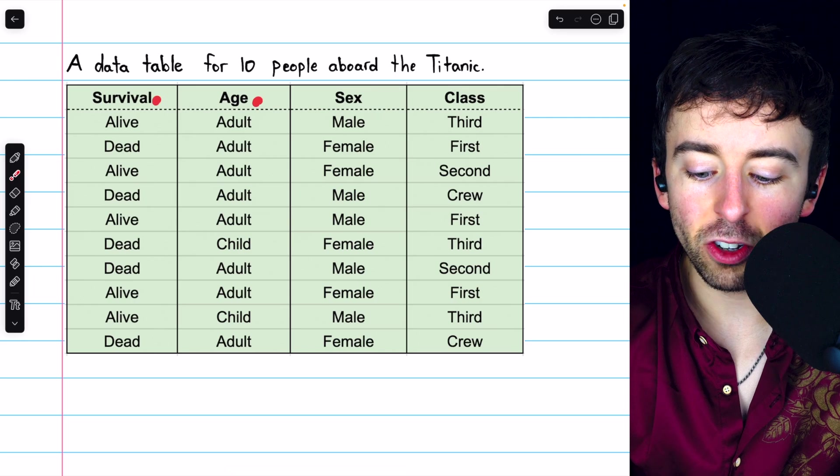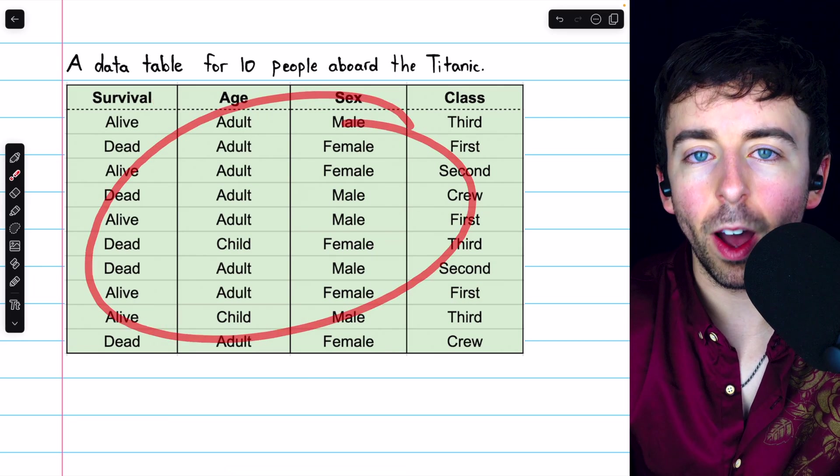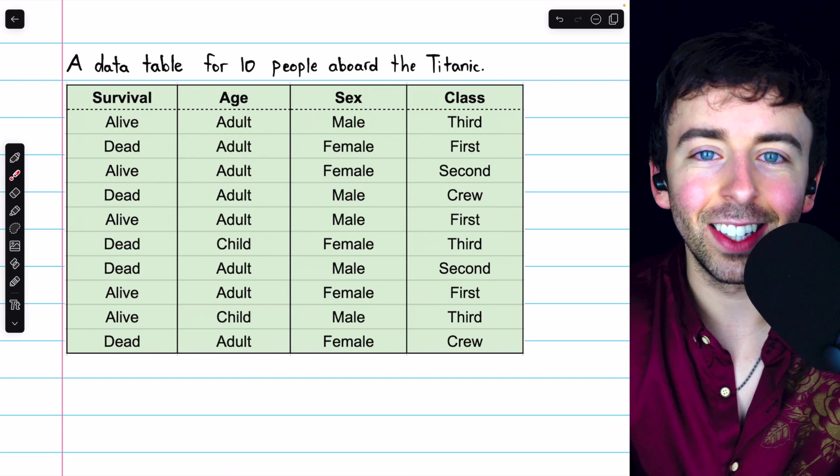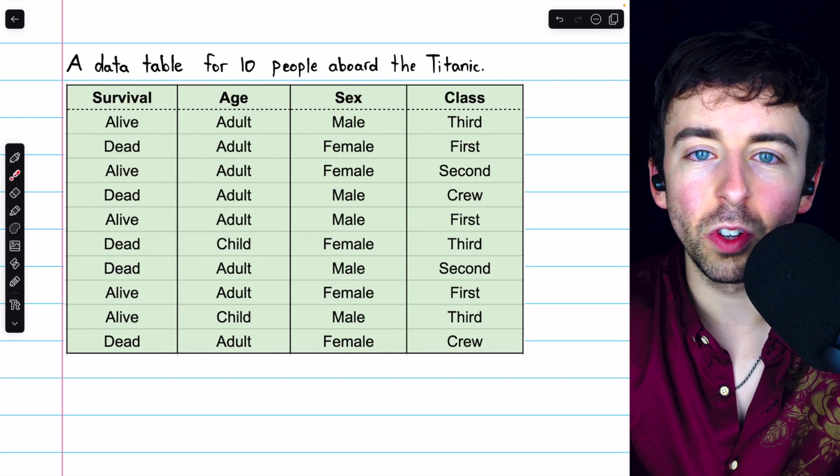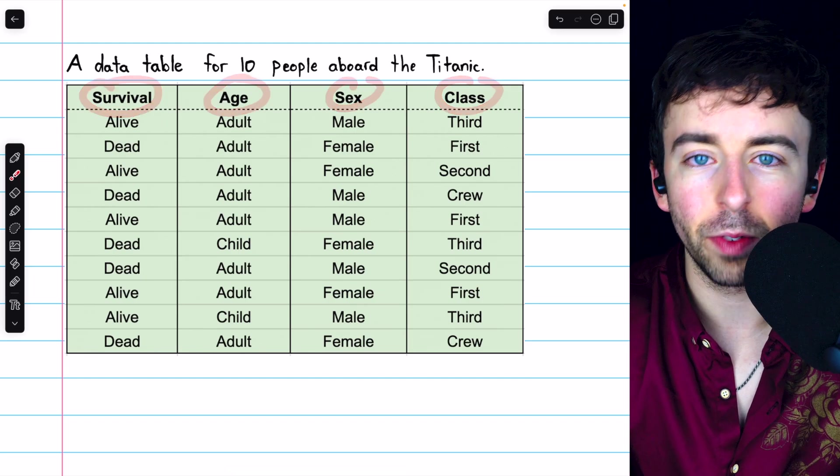Here is a data table for 10 people who were aboard the Titanic. We see this table shows four categorical variables: survival, age, sex, and class. This table is just how the raw data would be stored.